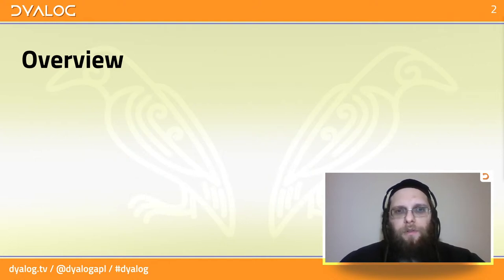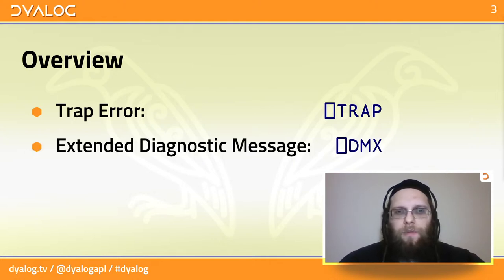So an overview of what we're going to look at today. There is a quad trap that I'll go over today and even though it's really called trap event we're going to call it trap error because we're not dealing with general events just errors. General events will be in a future webinar. And then there is quad DMX which is a container for a lot of information about the latest error that happened. Before we go into the details let's look at why what we learned in the previous webinar might not be sufficient for some advanced cases.